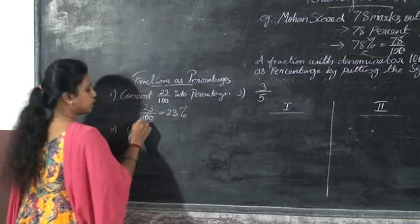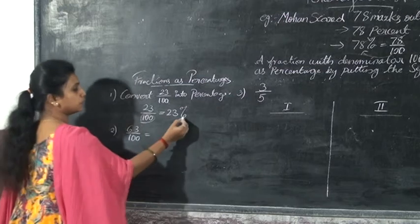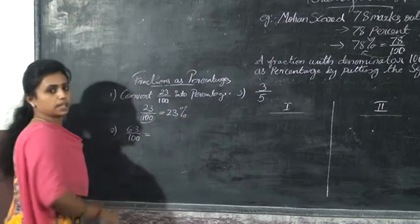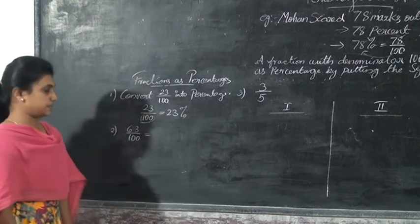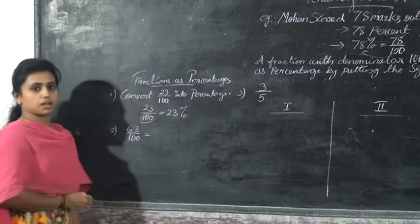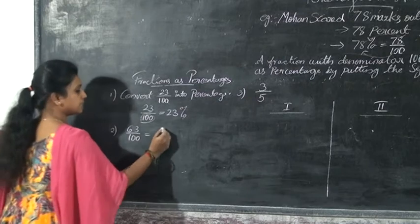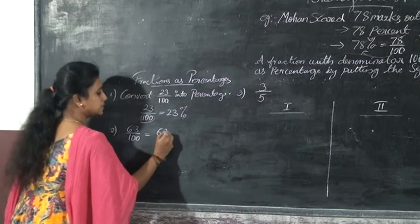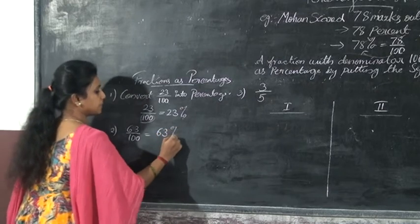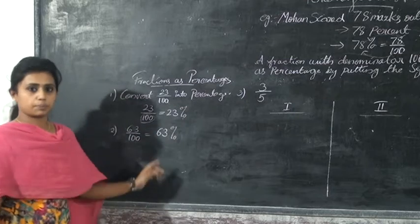If the denominator is hundred, then you just put the percent symbol. So 23 by hundred is 23 percent. Similarly, 63 by hundred — what is the answer? You can easily say the answer is 63 percent.